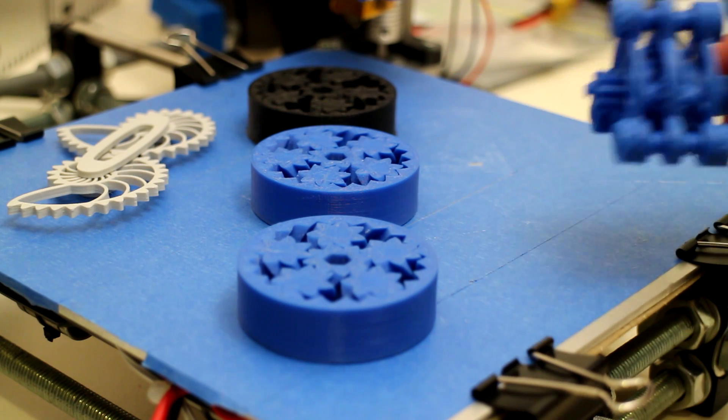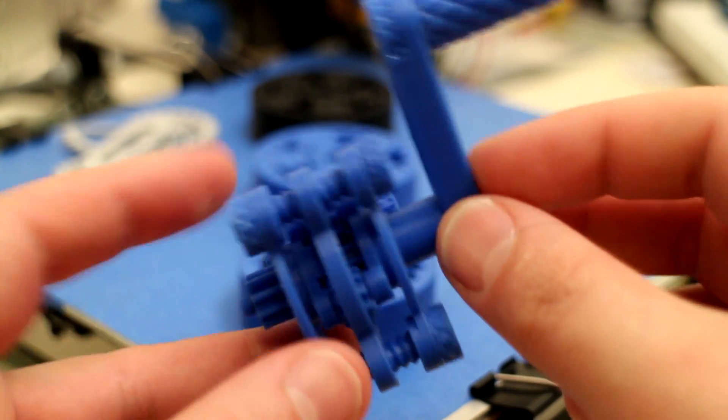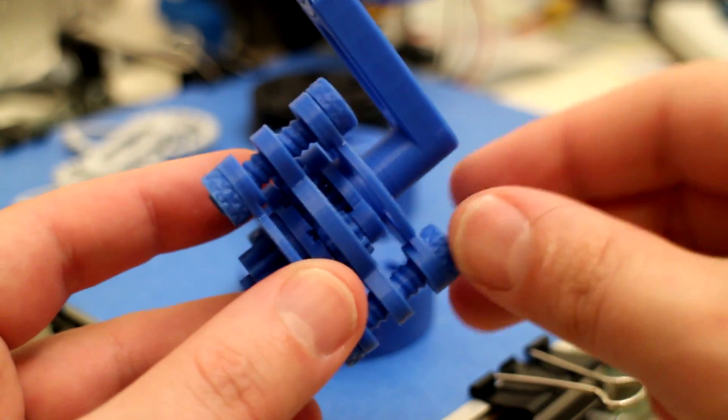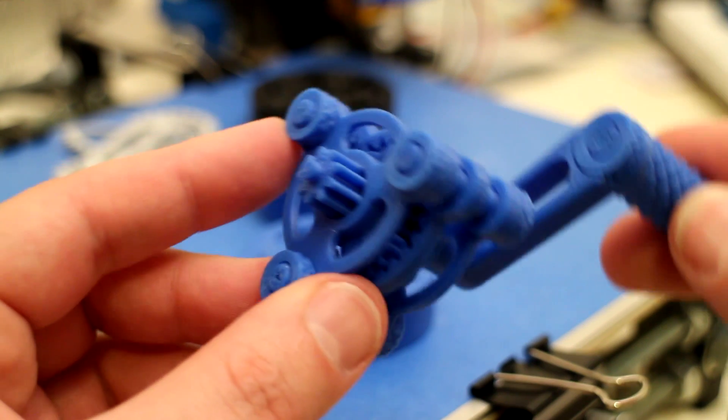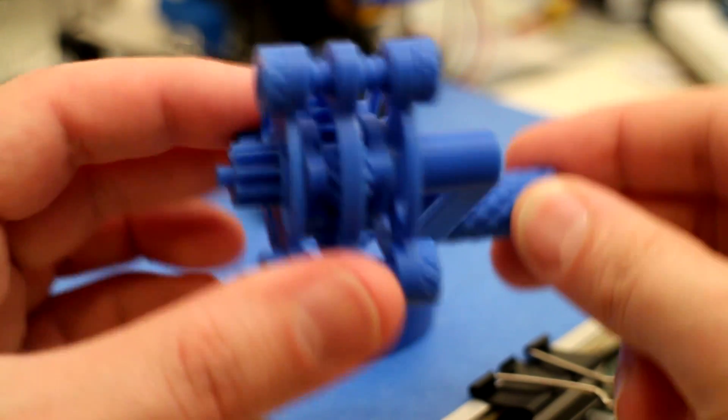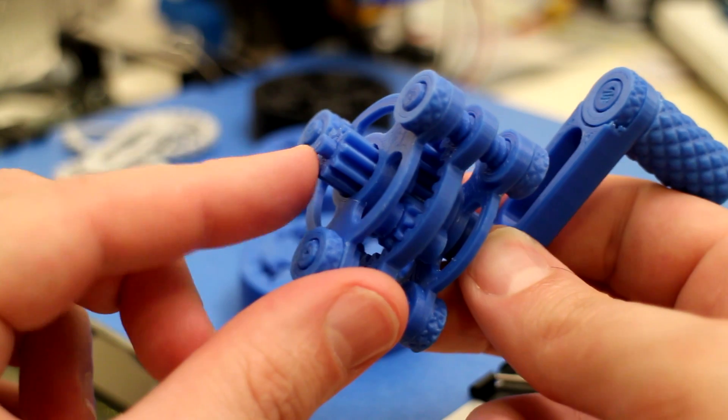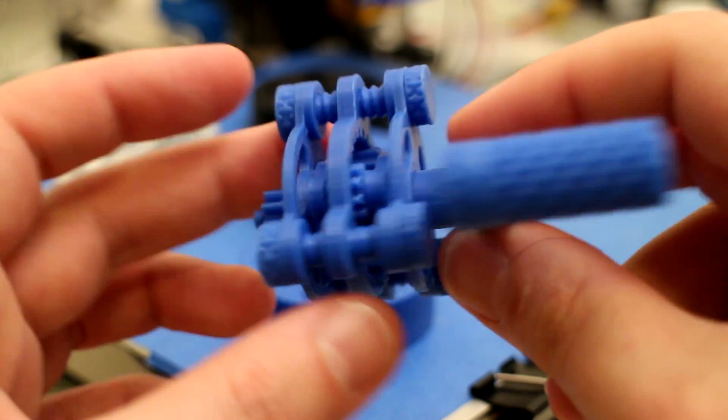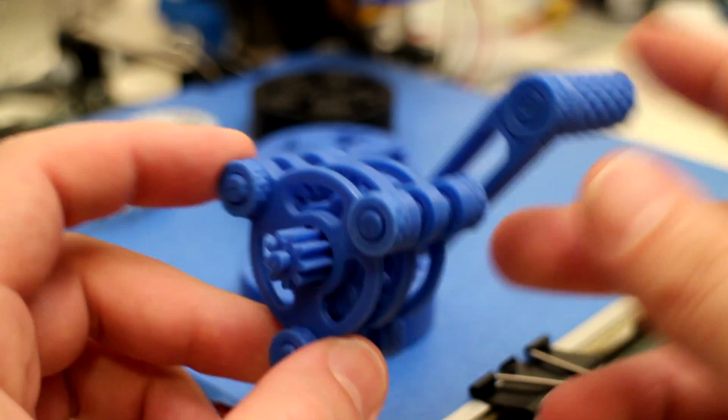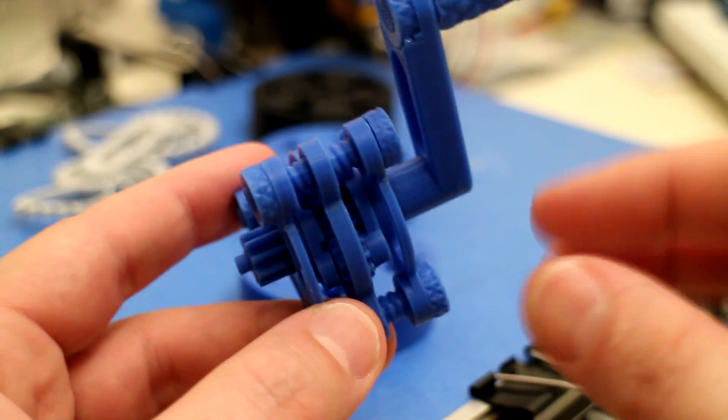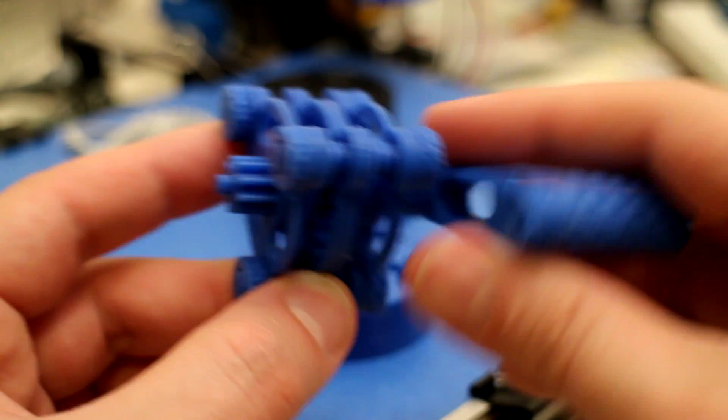Next up we have the tiny planetary gear set. This particular item is printed in individual pieces and then snapped together and screwed together with these plastic nuts and bolts that are part of the kit. This is a four to one gear reduction, so for every four turns of the crank you will get one rotation from the shaft. This particular item is a great showpiece because it demonstrates the accuracy of the printer now—being able to print all these pieces individually and then snap and screw them together and make a functioning working gear.